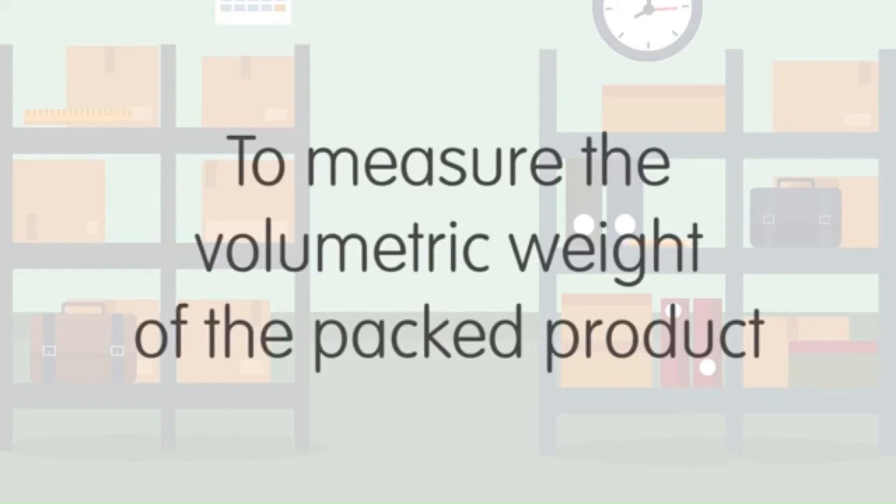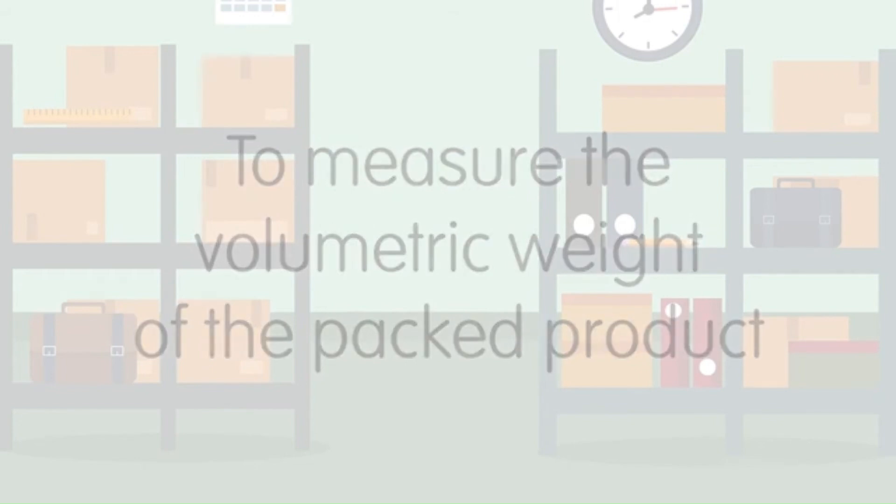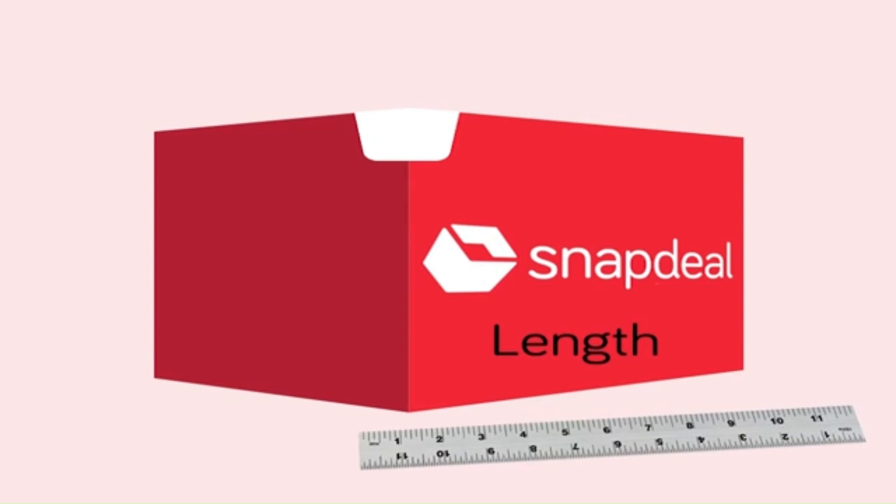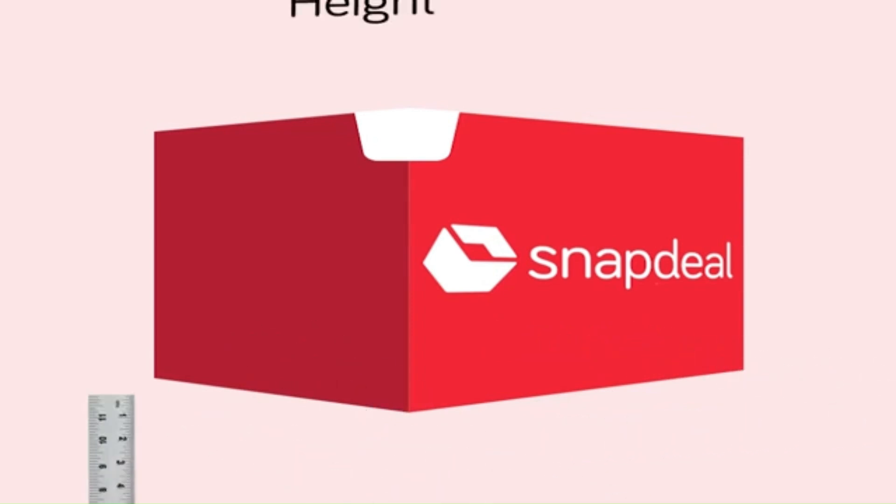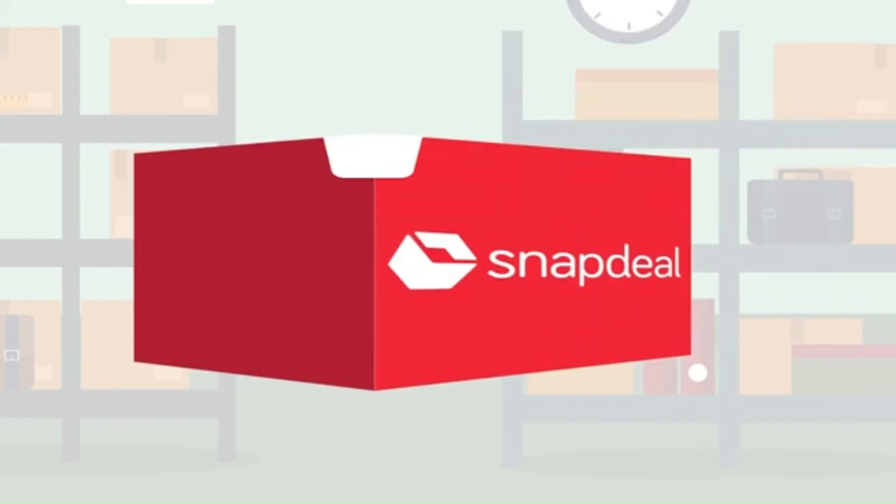Now, to measure the volumetric weight of a packed product, first let's find out the length, width, and height of the package. Let's assume that package dimensions are in centimeters and length of package is 30 centimeters, width 20 centimeters, and height is also 20 centimeters.